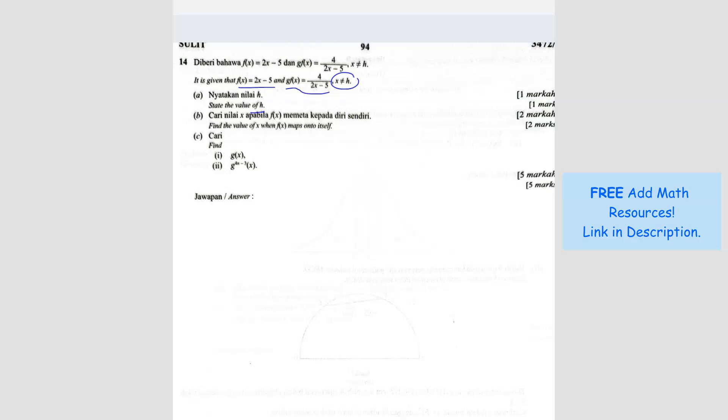Question A: State the value of h. So h is, okay, they say x not equals to h, right? So x is what? Well, what is x? x is the, actually the denominator here. Because we know that when it is a fraction, the denominator cannot be 0, correct?